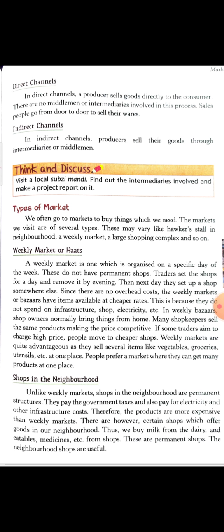Retailers wholesaler se purchase karte hain aur chhoti-chhoti quantities mein hume sell karte hain. So, direct channel mein ab kya hoga? Jo producer hai, woh seedha consumer ko sell karega. Example: retail outlets by different companies. Companies apne retail outlets kholti hain — means ek retailer ki tarah hain, jo companies hain, woh production bhi kar rahi hain aur retailer ki tarah seedha consumer ko saman de rahi hain. Means, direct channel mein, beech mein koi bhi intermediary ya middleman nahi hai. There is no middleman in case of direct channel. Producer will directly sell the goods to the consumer.